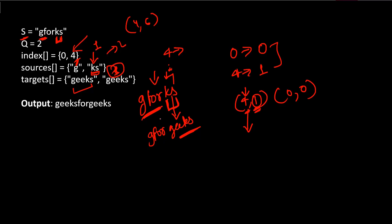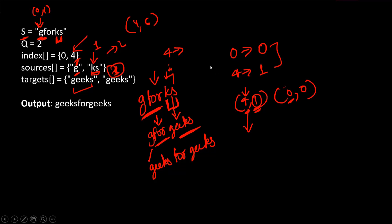Next we process the pair (0, 0). Sources[0] is 'g'. Taking substring from index 0 to 1 gives us 'g' from the string, which equals 'g' — the condition is true. We replace 'g' with target[0] which is 'geeks'. We also have to concatenate the in-between part ('for') that was not part of any replacement. The general idea is clear — we'll see how the in-between concatenation is handled in the code, and the final result is 'geeks for geeks'.